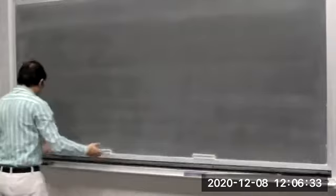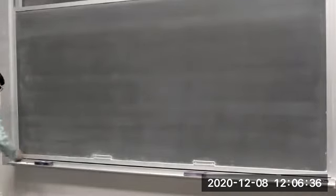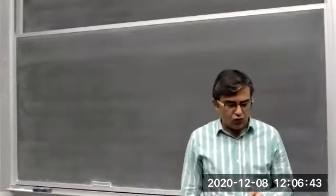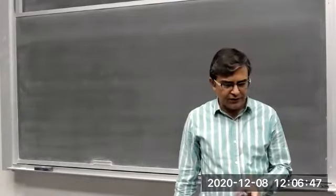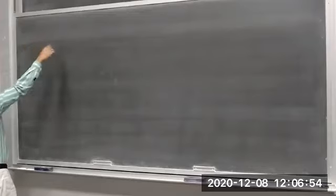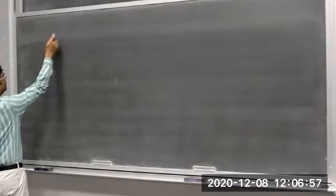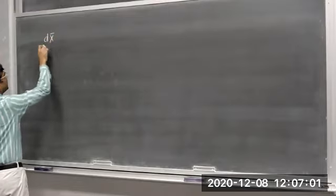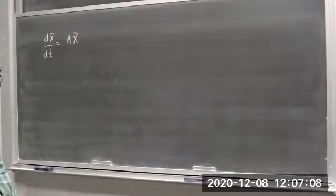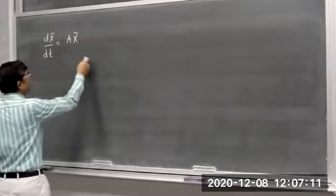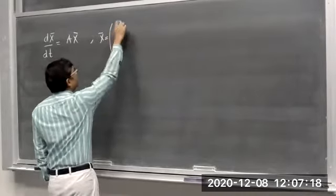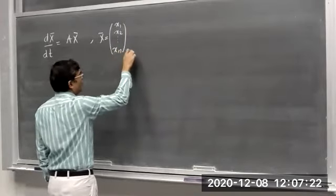In the previous lecture, we were discussing the system of first order differential equations. We discussed what is a system of first order differential equations and how to represent that system in matrix form. The matrix form is dx/dt = Ax, where x is a vector containing all unknown variables x1, x2, ..., xn, and it is an n×1 vector.